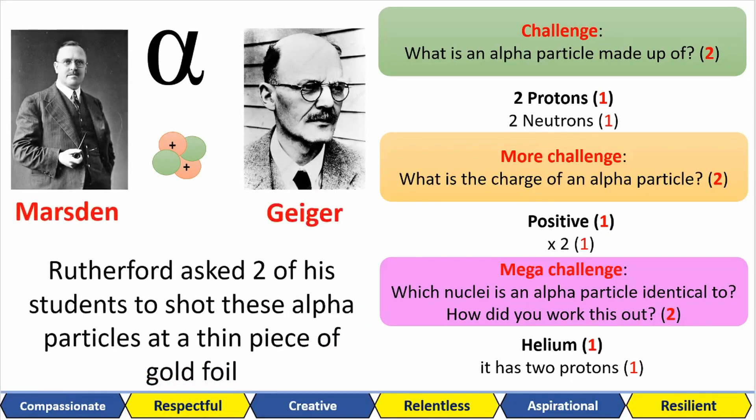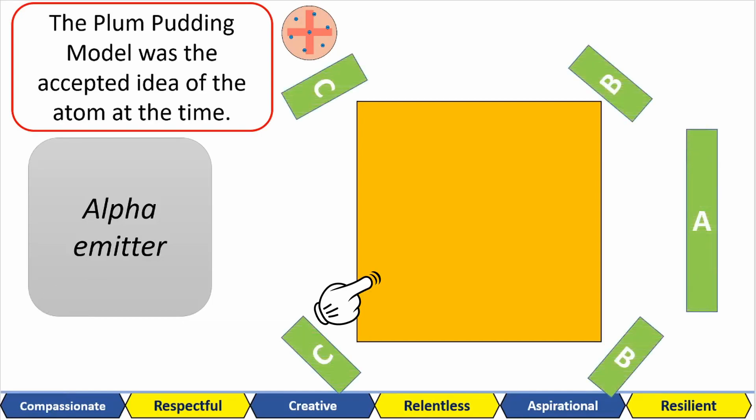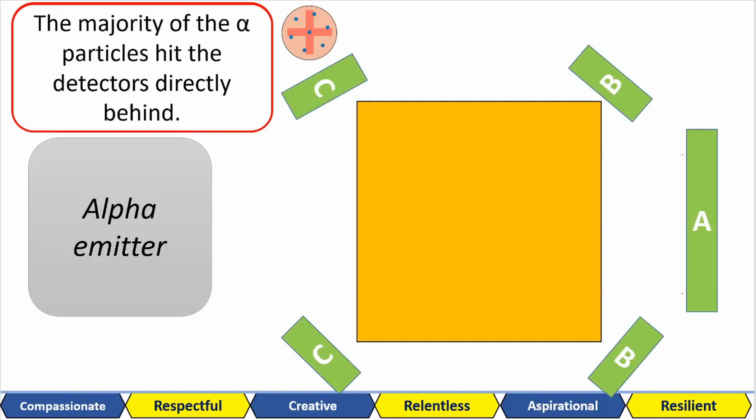Rutherford asked two of his students to shoot these alpha particles at a thin piece of gold, and this is what went down. Remember that back in these days, it was the plum pudding model of the atom that was accepted. These students set up an alpha emitter on one side over here, and a piece of gold foil on the other side. Around the gold foil, they had these screens that lit up when they were struck by alpha particles. They saw that the majority of the alpha particles went straight to the detector directly behind the gold foil.